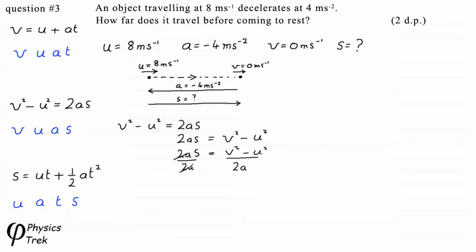2A cancels on the left. So we have S is equal to V squared minus U squared divided by 2A.